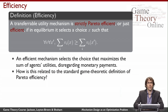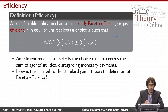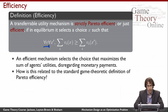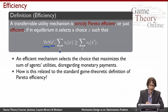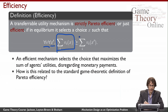A mechanism is strictly Pareto efficient — or just efficient — if, in equilibrium, it selects a choice X with the following properties: for all joint valuation vectors the agents might have (their actual valuations, not reported ones), and for all other choices X prime, the sum of the agents' valuations for X is at least as big as the sum of their valuations for X prime.